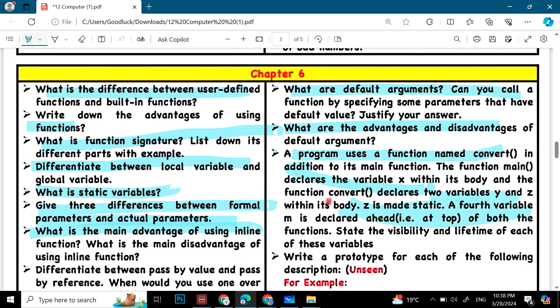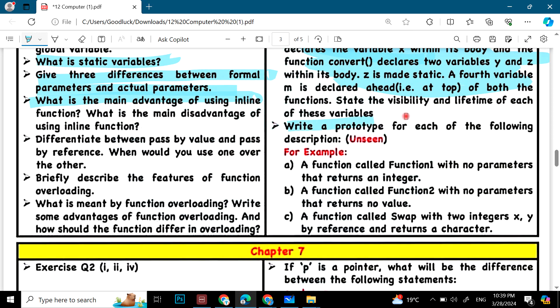Then a program that you have mentioned. Write a prototype of each of the following. Now the example of their prototype, differentiate between pass by value and pass by reference, briefly describe the feature of function overloading. What is the advantages of function overloading?